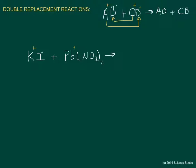What we'll get is PbI₂ plus KNO₃. But we're not entirely done, because we need to pay close attention to the actual charges. Potassium has a plus one charge and lead in this particular case is going to have a plus two charge. That means iodine is going to have a minus one charge, and nitrate is going to have a minus one charge — but since we've got two of them, the total charge there is going to be minus two.